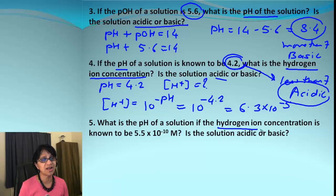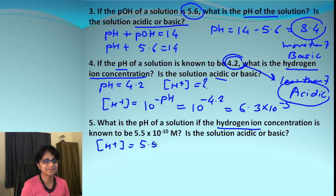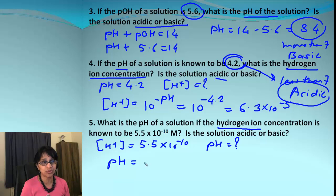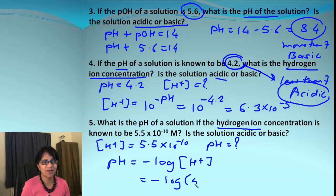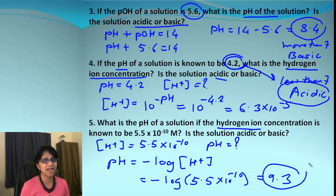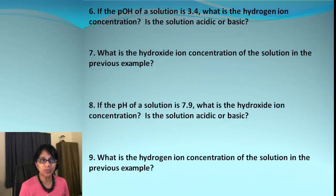Problem 5: Find the pH when [H⁺] = 5.5×10⁻¹⁰. Using pH = −log[H⁺] = −log(5.5×10⁻¹⁰), the answer is 9.3. Since 9.3 is greater than 7, the substance is basic.